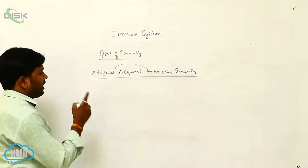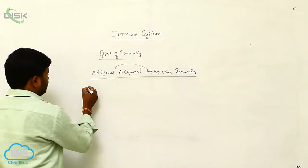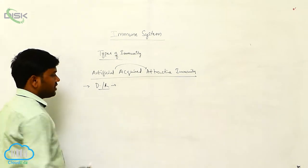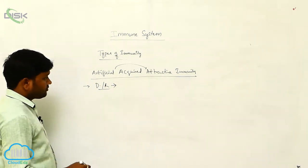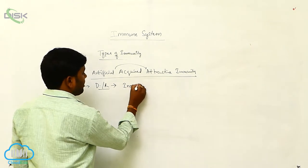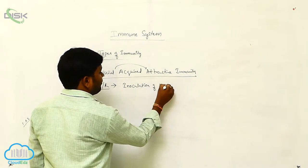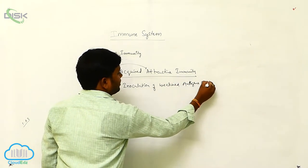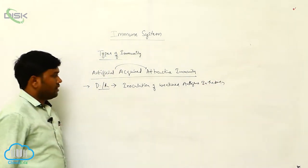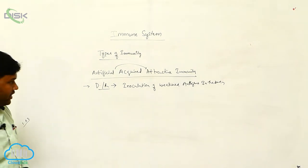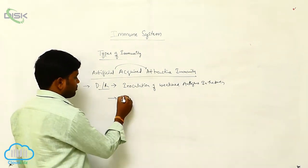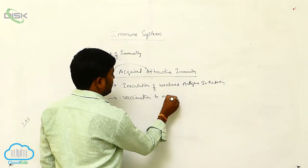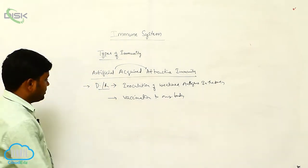Next, artificial active acquired immunity. The defense or resistance in an individual is developed by the inoculation of weakened antigens in the body. This means giving vaccinations to our body.